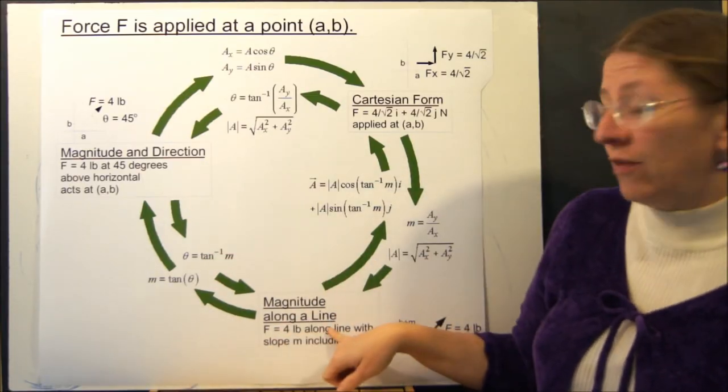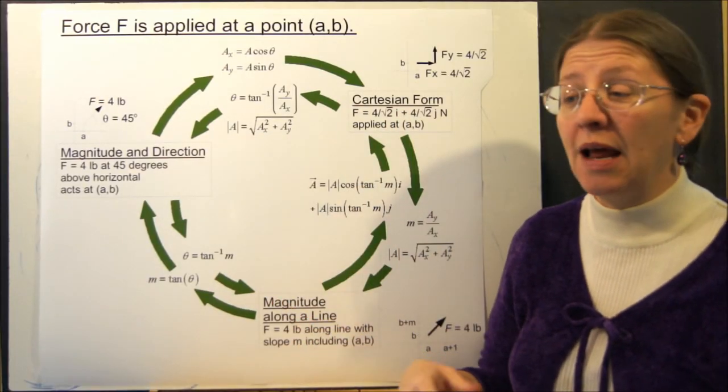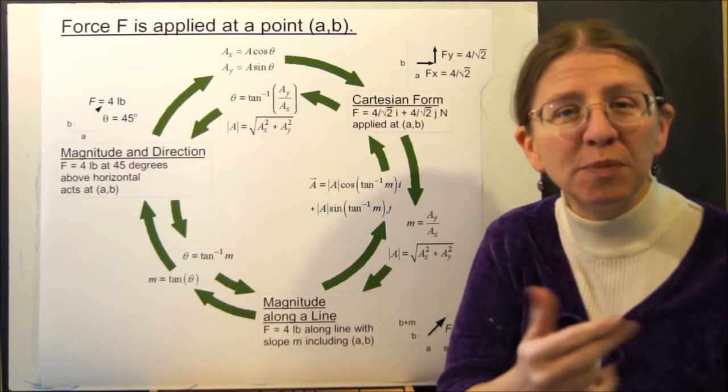As you see, going from magnitude along a line to Cartesian form uses something that I refer to as position vector, unit vector, multiply. We'll do that a lot.